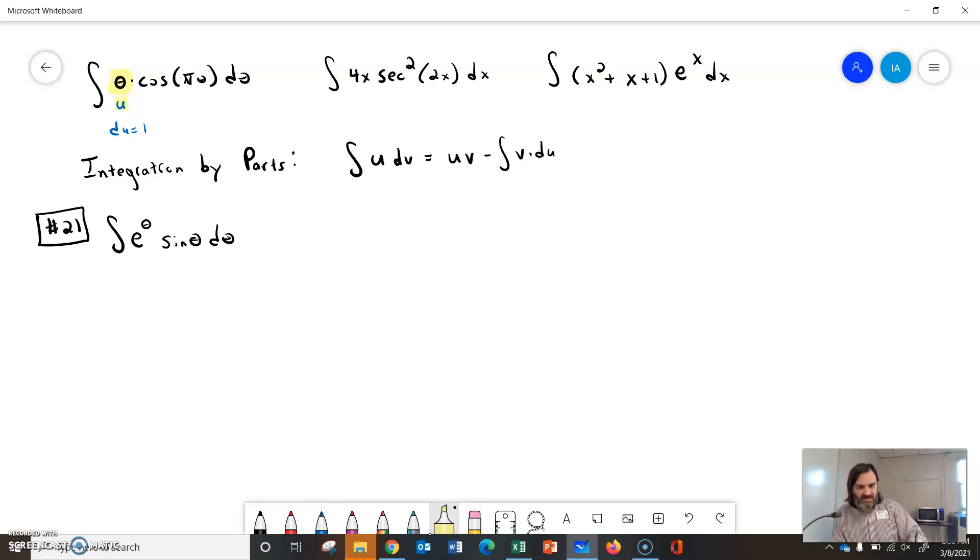Same thing with another example we did was the integral of 4x times something. Well, we let 4x be our u, and then du was 4. And so, again, the x went away.